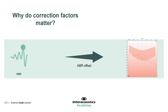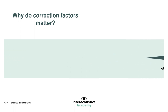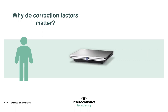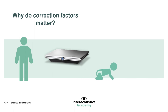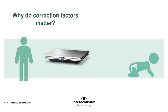This is called the ABR offset. Evoked potential systems are calibrated to adult data, but more often than not evoked potential testing, particularly the ABR, is used on babies. If we are testing babies, we need a way of converting the calibrated ABR stimulus into something that more closely relates to these infants. Our babies also grow very rapidly, and we'll talk more about how we need to account for that later.